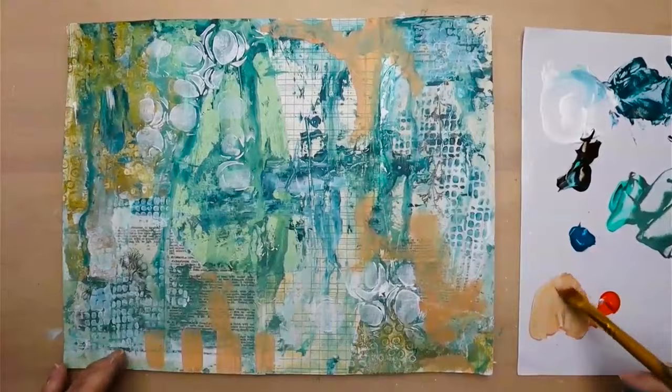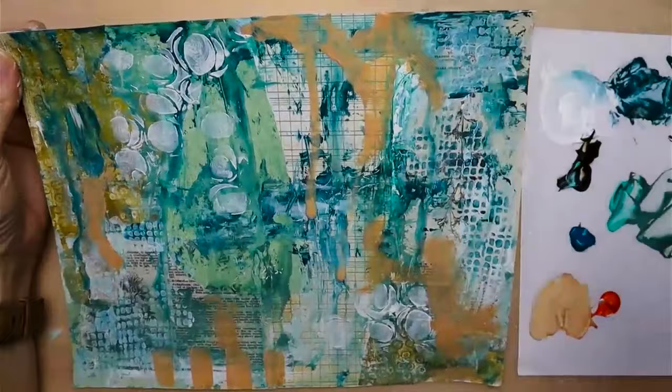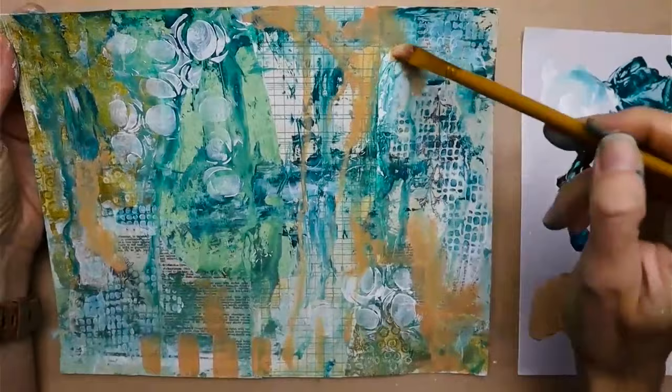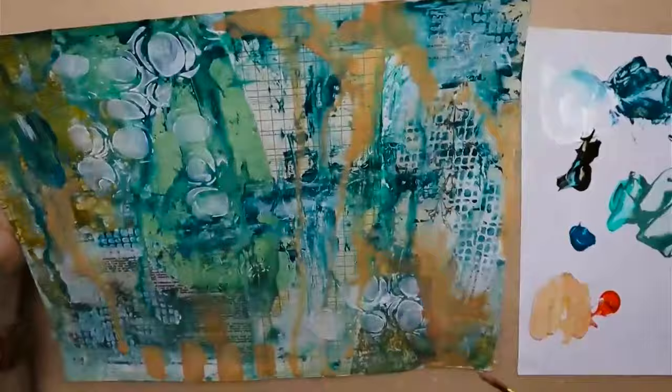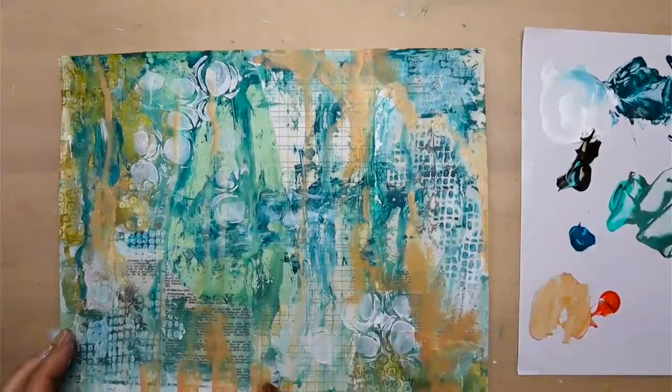So just kind of having fun and playing around with different areas and then adding some water, seeing what kind of design it makes on its own. And trying to make up for some of that heavy turquoise, there's a lot of it. And adding in some lighter, peachy color, peachy orange.